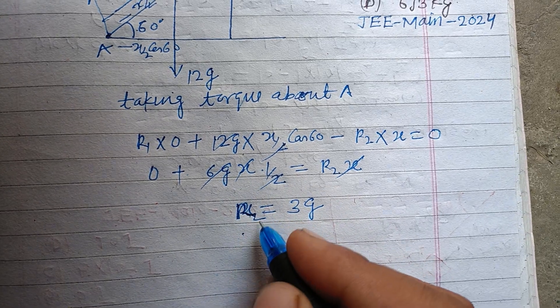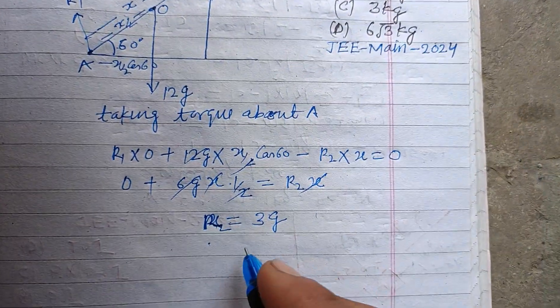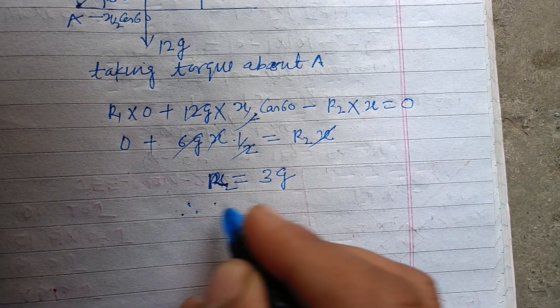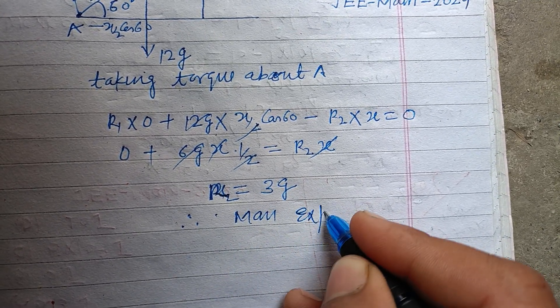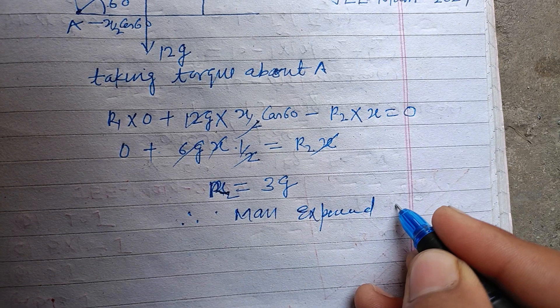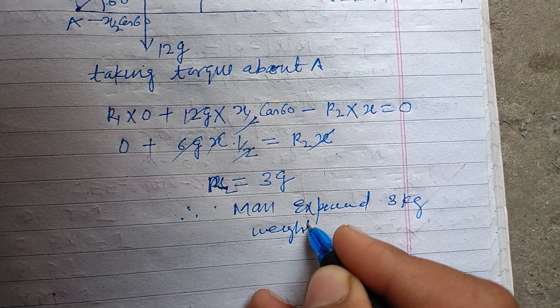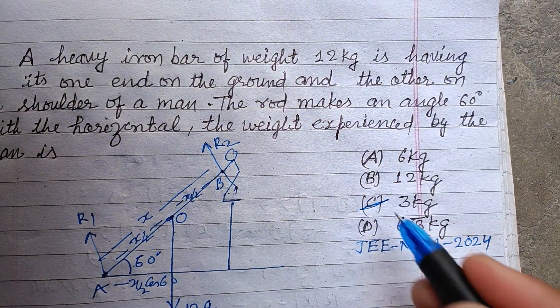X is cancelled. R2 reaction of the shoulder is R2. So the shoulder is feeling 3 kg weight. Therefore man experiences 3 kg weight. So the answer to this question is C, 3 kg.